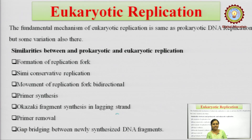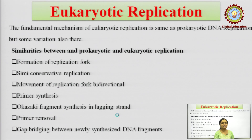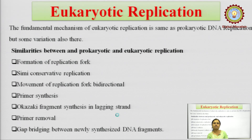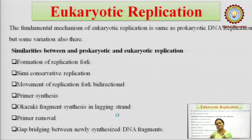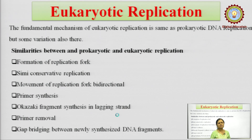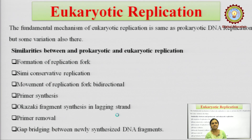Now we would be studying replication in eukaryotic organisms. In eukaryotes, DNA is present in linear form, whereas in prokaryotes it is circular. In prokaryotes there is only one origin of replication, but in eukaryotes there are multiple sites of origin where the enzyme will come and initiate the replication process. The fundamental mechanism of eukaryotic replication is the same as prokaryotic DNA replication, with only a few steps and enzymes being different.